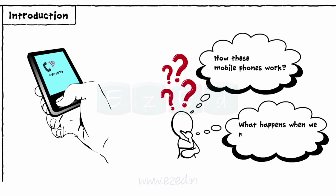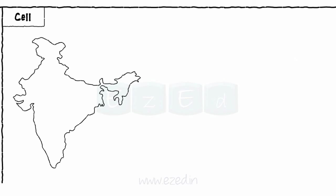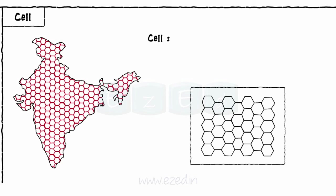Let's start with the cellular concept. We can make a call from one part of the country to another part of the country. Practically, every city is divided into small areas. Each area is called a cell. Thus, a cell is defined as a basic geographical unit of a cellular communication system.